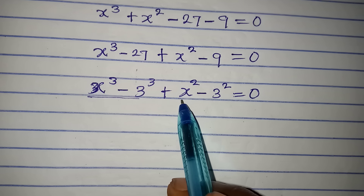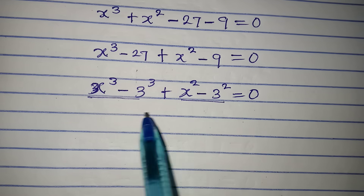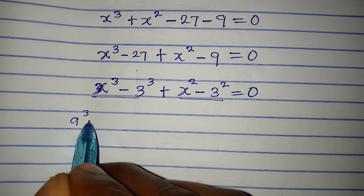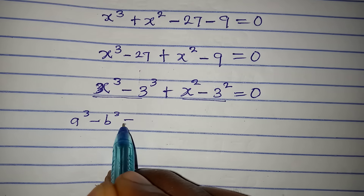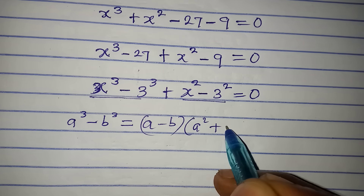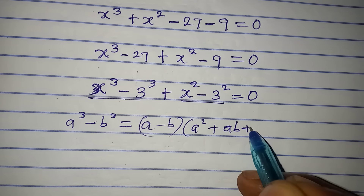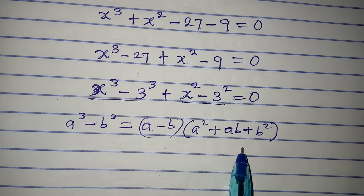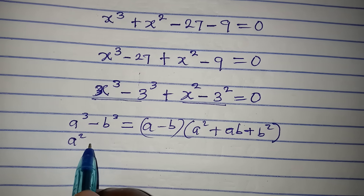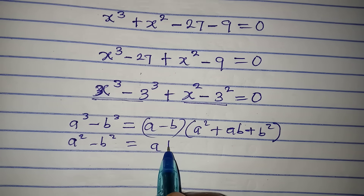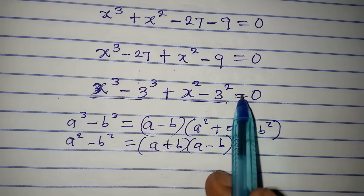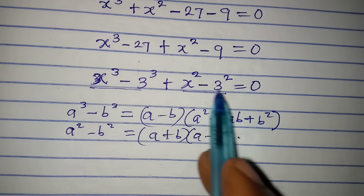I'm going to deal with these two groups separately. There is a principle I'd like to bring up: if you have a to the power of 3 minus b to the power of 3, this is the same as a minus b, times bracket a squared plus ab plus b squared. I'm going to apply this principle. And then for the other part, I will apply difference of two squares — if you have a squared minus b squared, this is the same as a plus b times a minus b. I'm going to apply these two principles to this problem.